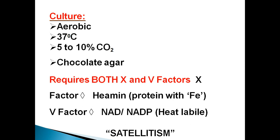In blood, hemoglobin consists of globin (protein) and heme (iron), so the protein with iron — Factor X — is easily obtained from blood. Factor V is NAD — nicotinamide adenine dinucleotide — which acts as a hydrogen receptor in the metabolism of the cell.